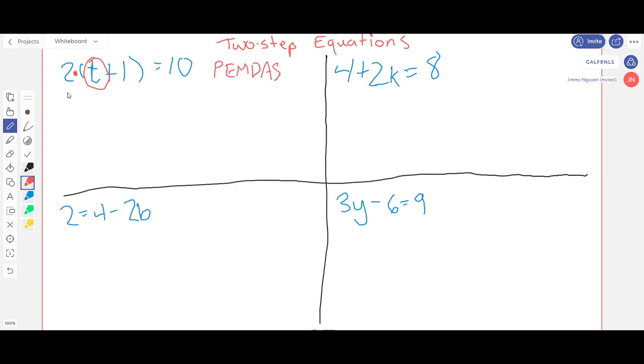Remember that multiplication and division are grouped together and addition and subtraction are grouped together. If we were to solve this just the way it is and we knew what t was, we would do what's inside the parentheses first because P is first.